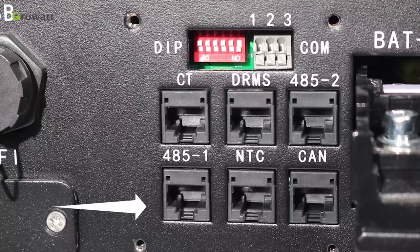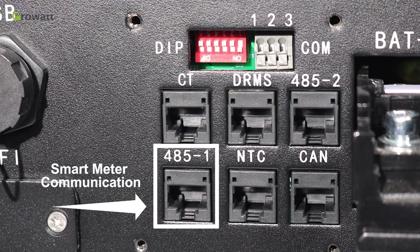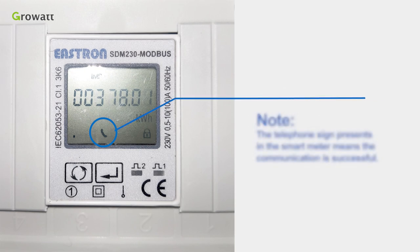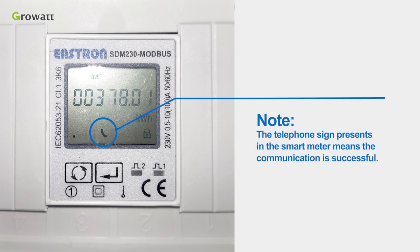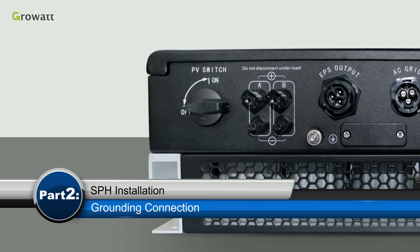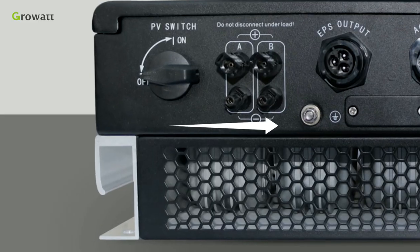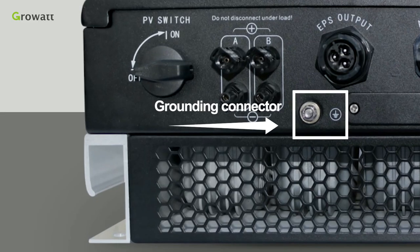Thirdly, connect the other side of the line to port 4 to N line of SPH. Note, the telephone sign present in the smart meter means the communication is successful. The grounding connector is at the bottom of the SPH.